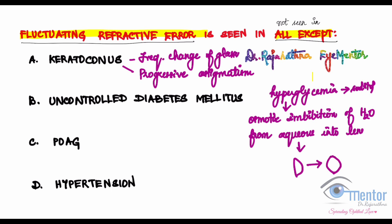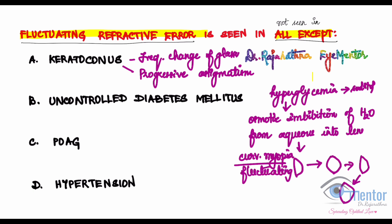When you have uncontrolled diabetes mellitus, as the glucose level fluctuates in the blood, the lens curvature is also going to fluctuate back and forth. So because of this curvaceary myopia, because of this swelling, the curvaceary myopia that ensues is again fluctuating. So this is seen in keratoconus and it is seen in uncontrolled diabetes mellitus.